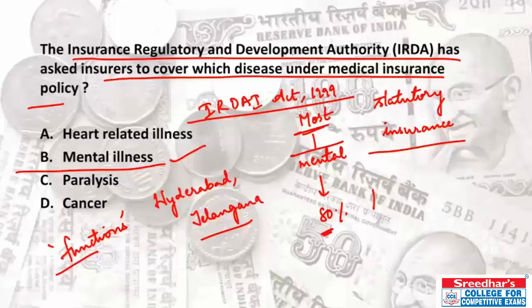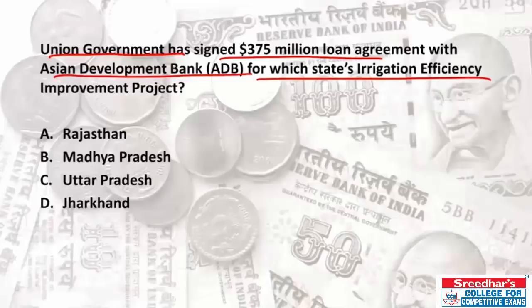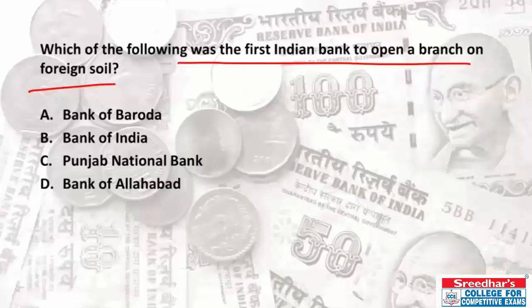IRDAI also levies fees and other charges for non-compliance. It is the premier organization for insurance regulation in India. The union government has also signed a 375 million dollar loan agreement with the Asian Development Bank for Madhya Pradesh's irrigation efficiency improvement project.